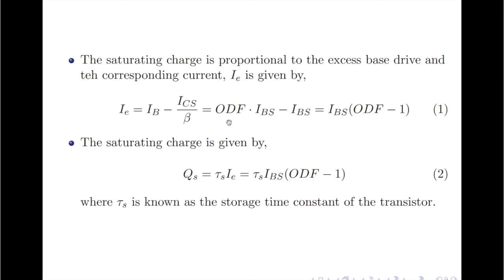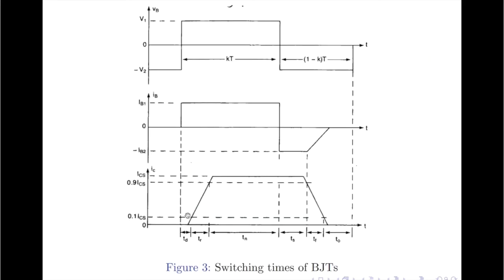Since Ib = ODF × Ibs and ICs/β equals Ibs, this simplifies to Ie = Ibs × (ODF − 1). The corresponding saturating charge is given by equation 2: Qs = τs × Ie. Substituting for Ie from equation 1, the saturating charge becomes Qs = τs × Ibs × (ODF − 1), where τs is known as the storage time constant of the transistor.